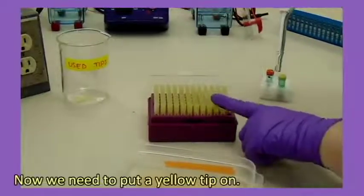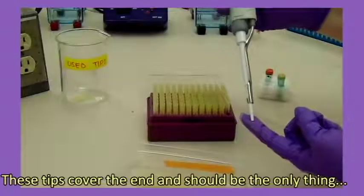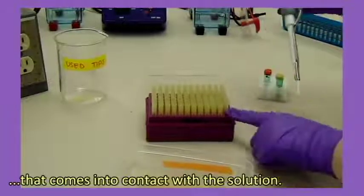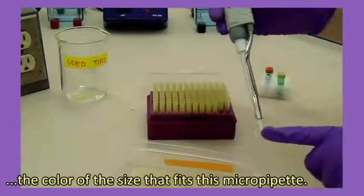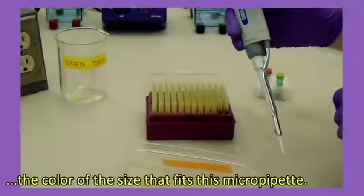Now we need to put a yellow tip on. These tips cover the end and should be the only thing that comes in contact with the solution. The tips are color-coded and yellow is the color of the size that fits this micropipette.